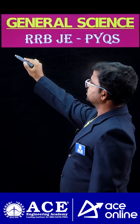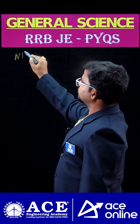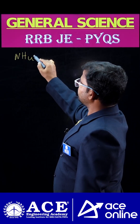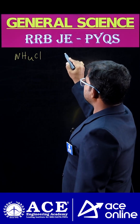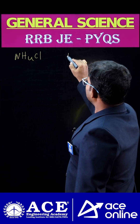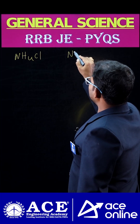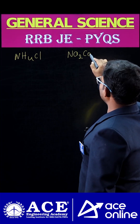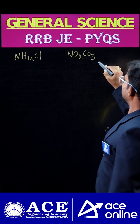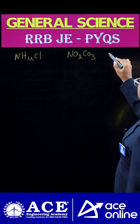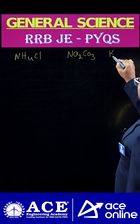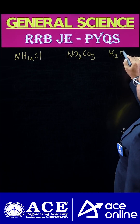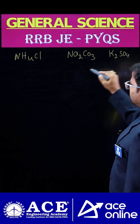Here we have some shortcuts. The three salts are: NH4Cl (ammonium chloride), Na2CO3 (sodium carbonate), and K2SO4 (potassium sulfate).